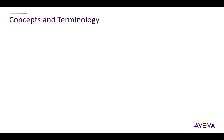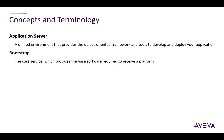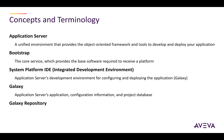To understand System Platform, it is really important to know some key concepts and terminology. First is Application Server — the environment that provides the object-oriented framework and tools to develop and deploy your application. Next is the bootstrap, the core service which provides the base software required to receive a platform. Next is the System Platform IDE, or Integrated Development Environment, where you configure and deploy the application, known as the Galaxy. Galaxy is the application that contains the configuration information and is the project database. Galaxy Repository is the computer and software that hosts and manages the Galaxy.